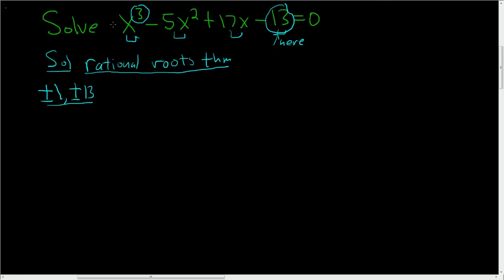Then we're going to divide this by the factors of the number that's here. So in this case, that number is 1, so plus or minus 1. So this gives us plus or minus 1 over plus or minus 1 is plus or minus 1, and plus or minus 13 over plus or minus 1 is plus or minus 13.